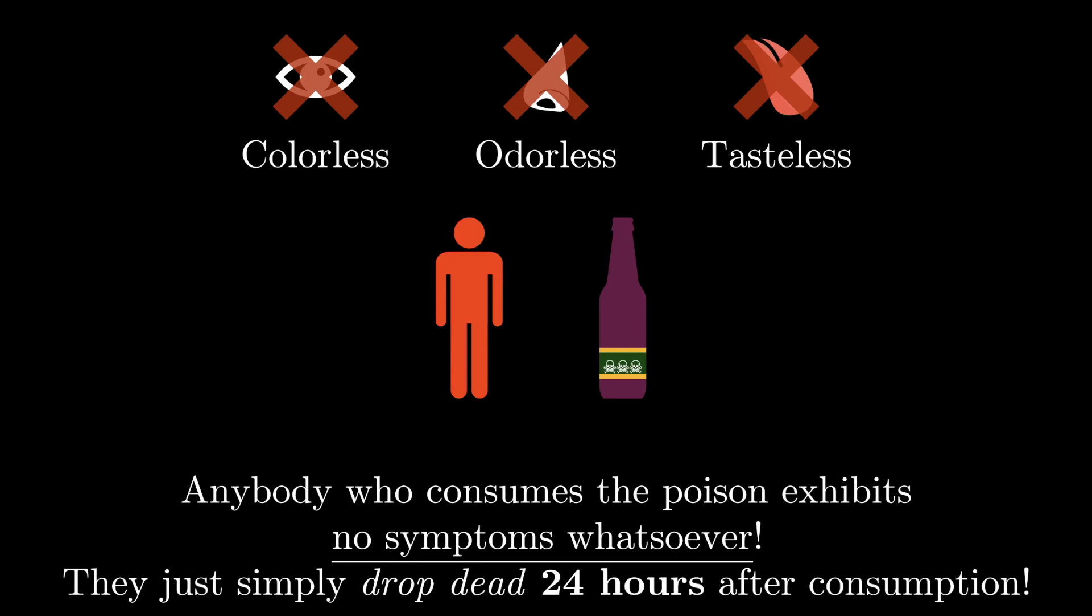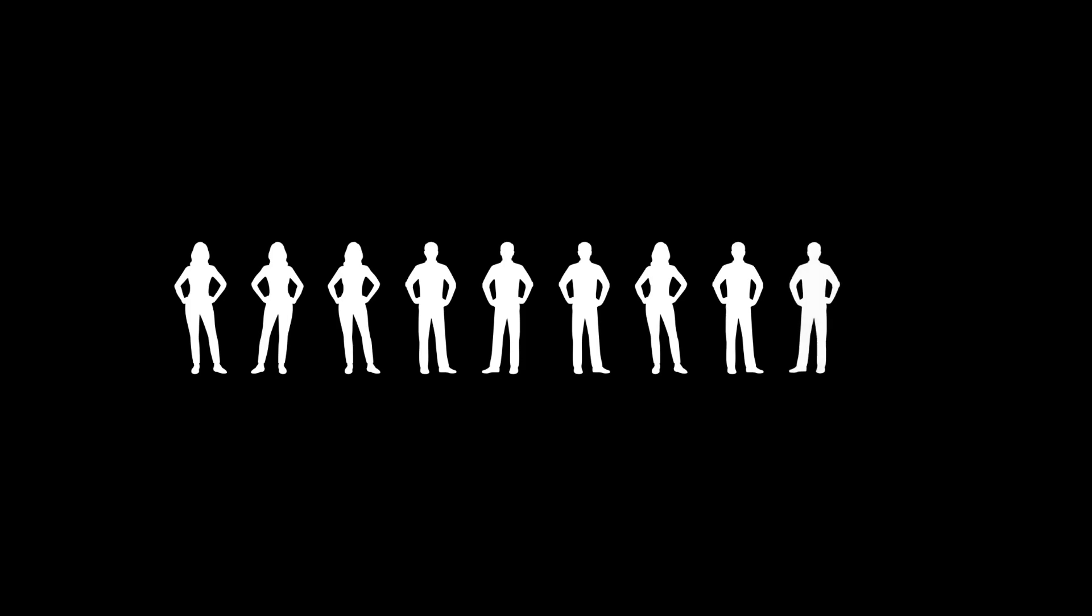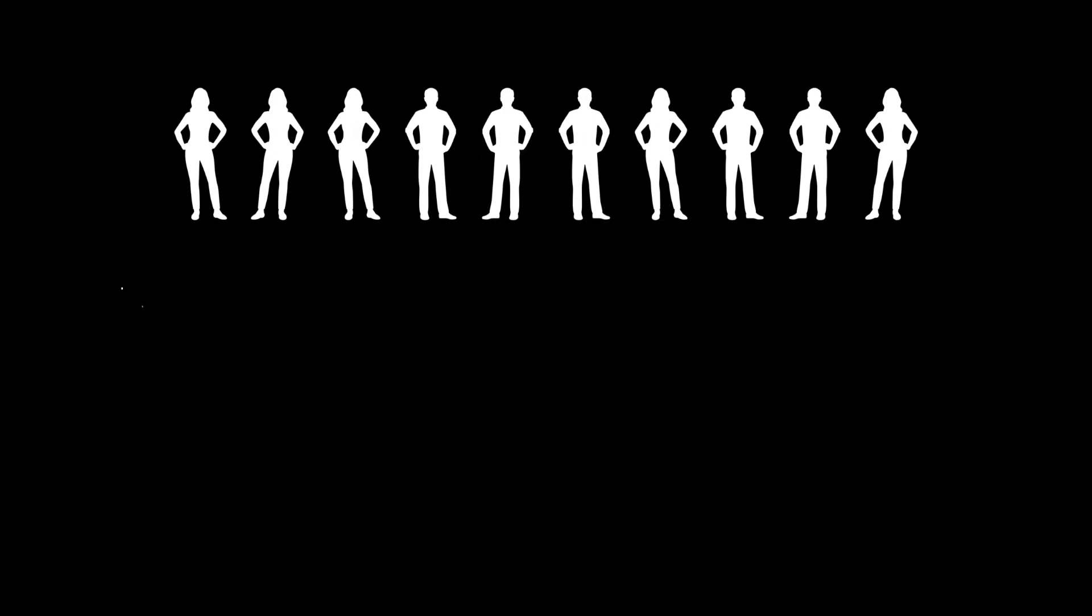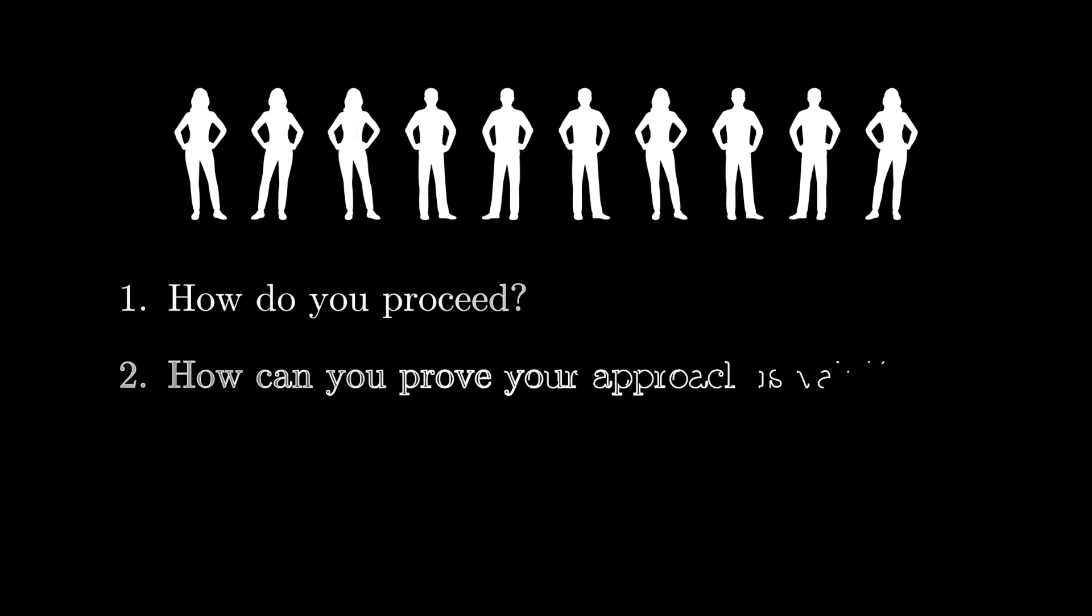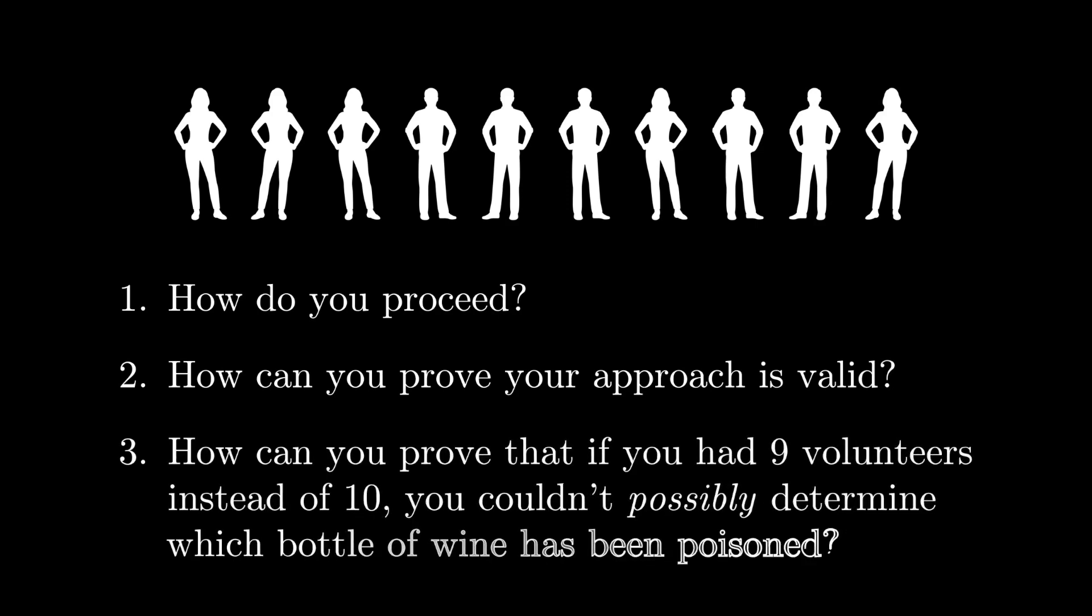So you are alerted of the situation and you are told that you have exactly 24 hours to determine which of the 1,000 bottles is poisoned. And 10 of the king's most loyal subjects have volunteered to taste the bottles as per whatever algorithm you devise and they are even prepared to lay down their lives if necessary. So here's the question. How do you proceed? And how can you prove that your approach is valid? And how can you also prove that if you had maybe 9 volunteers instead of 10, you couldn't possibly determine which bottle of wine has been poisoned?